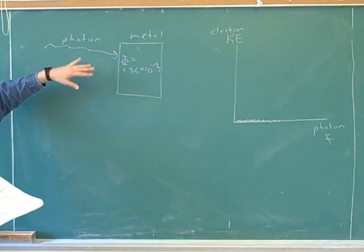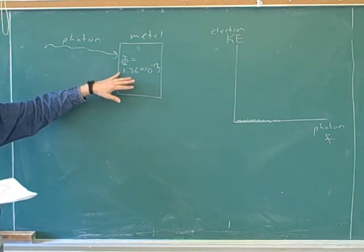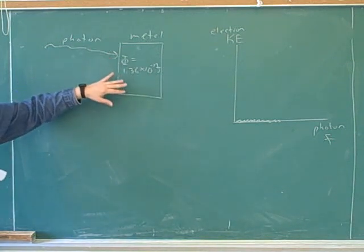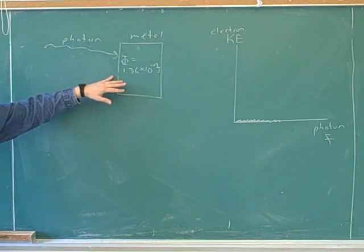So eventually, we'll get to the point where we have just enough energy to free this. Now, suppose that we have freed the electron, but we only had just barely enough energy to free it. Well, in that borderline case, how much kinetic energy would that freed electron have?